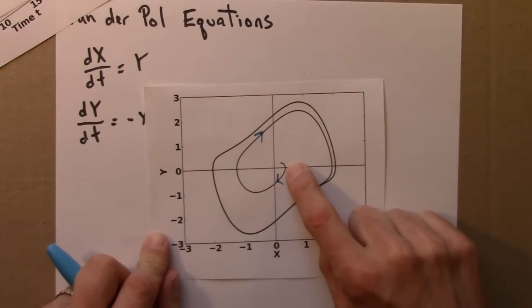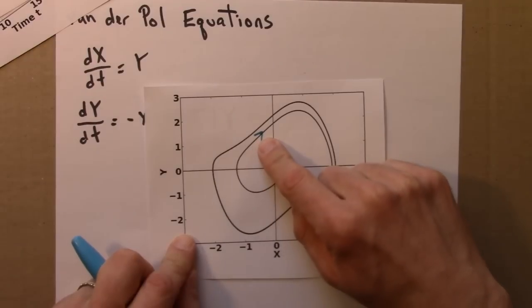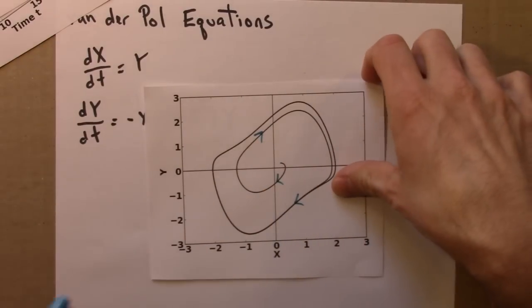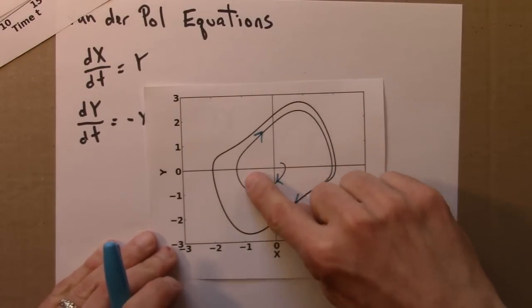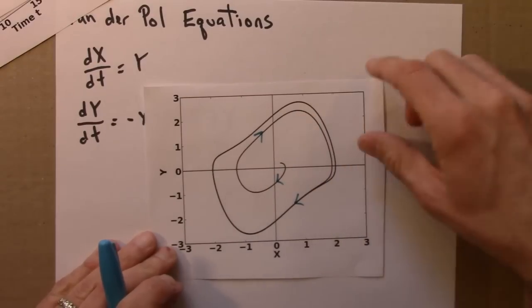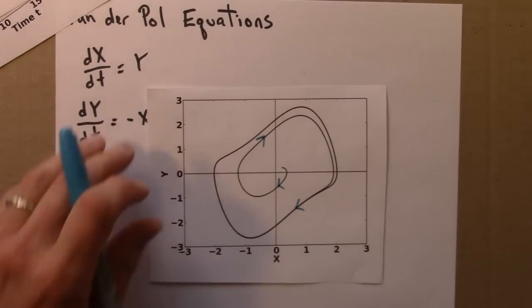The phase portrait for this would show several different initial conditions all getting pulled towards this. So, let me show you what that looks like. Here it is. Again, I'll draw on a few arrows.